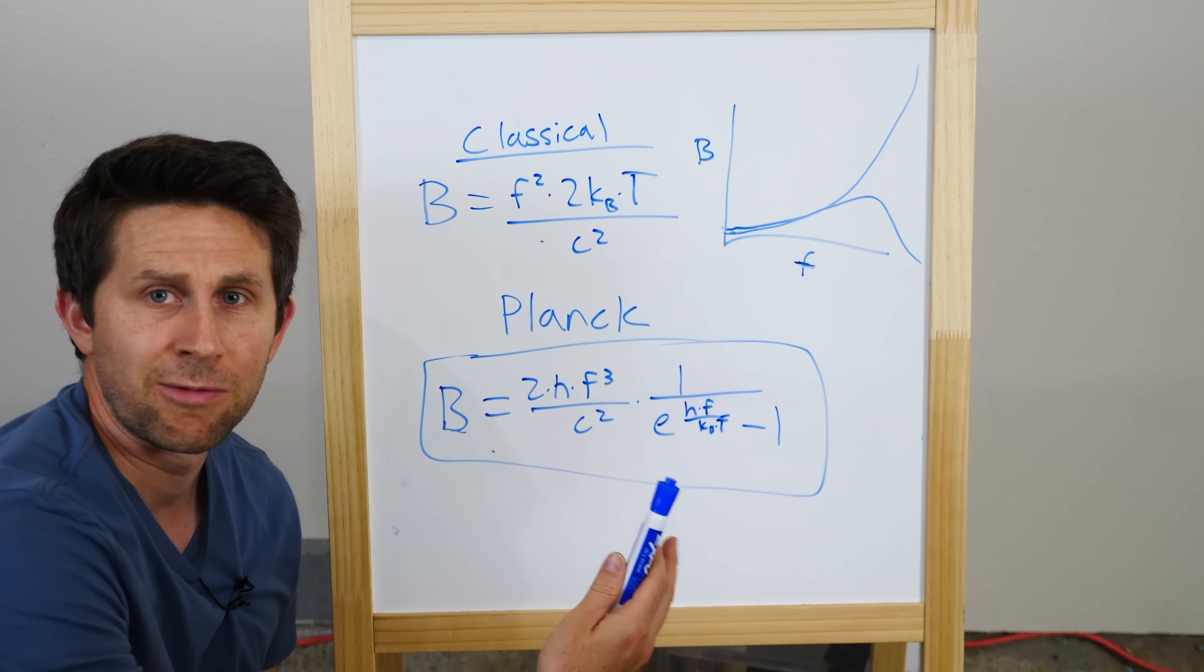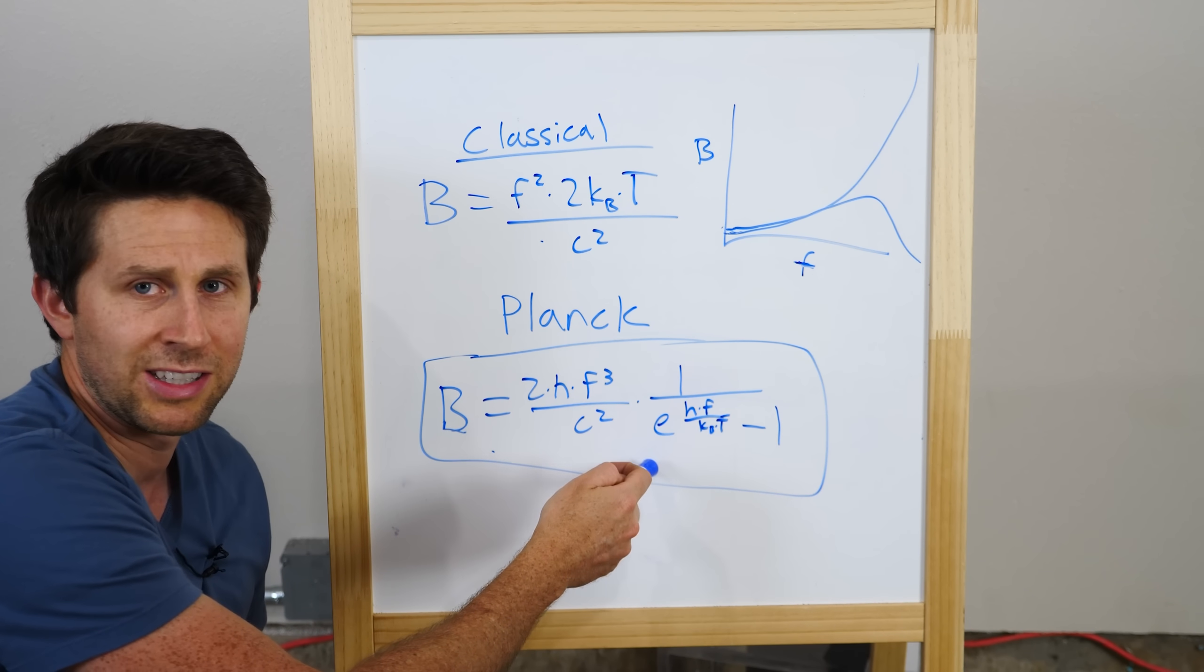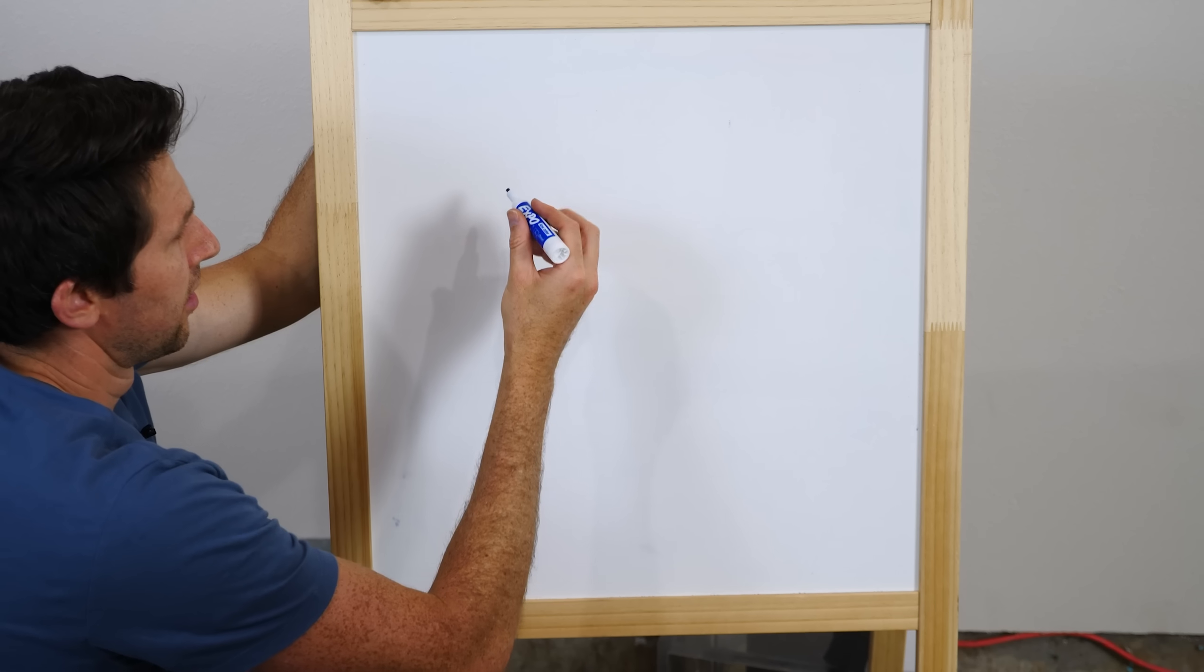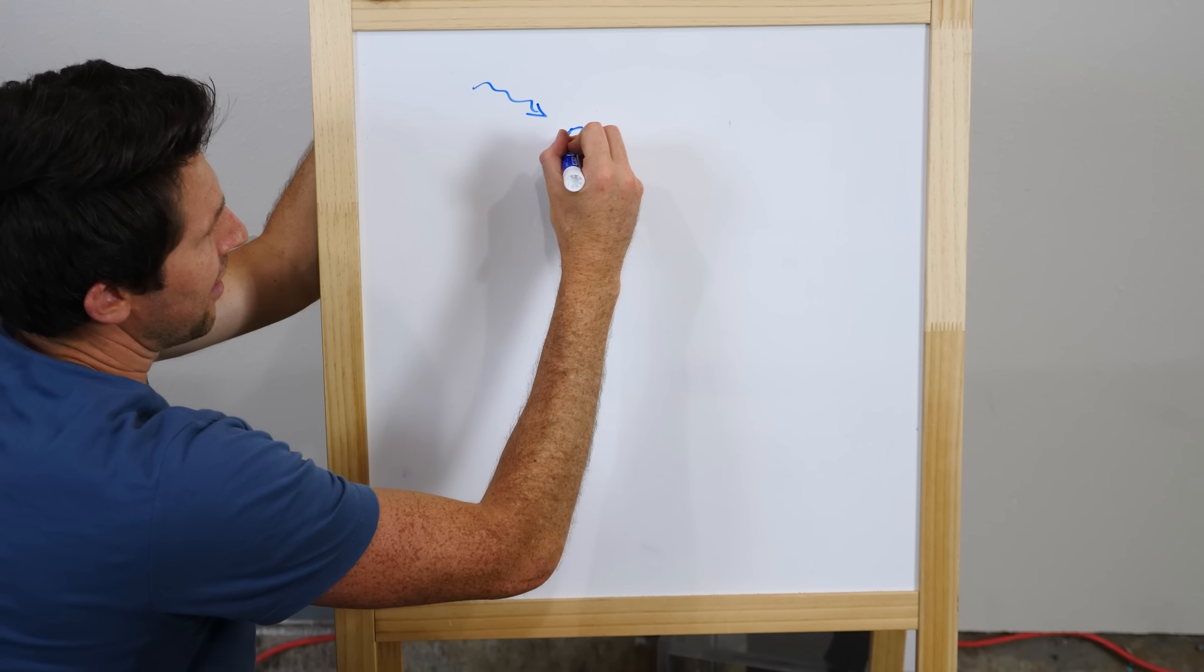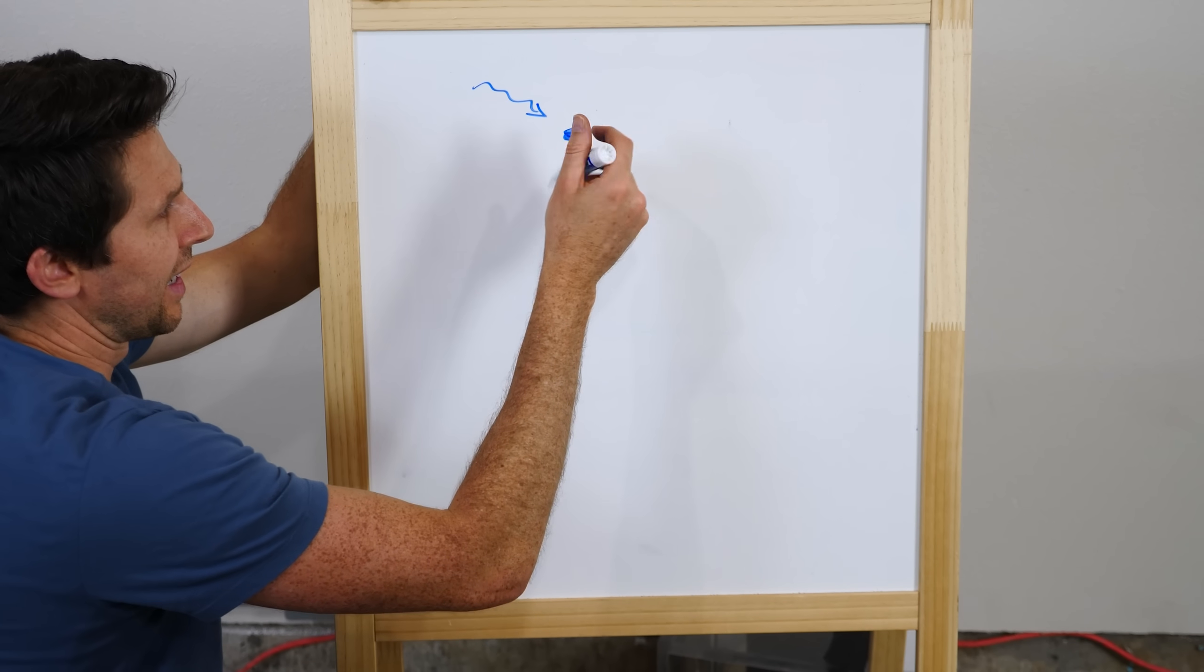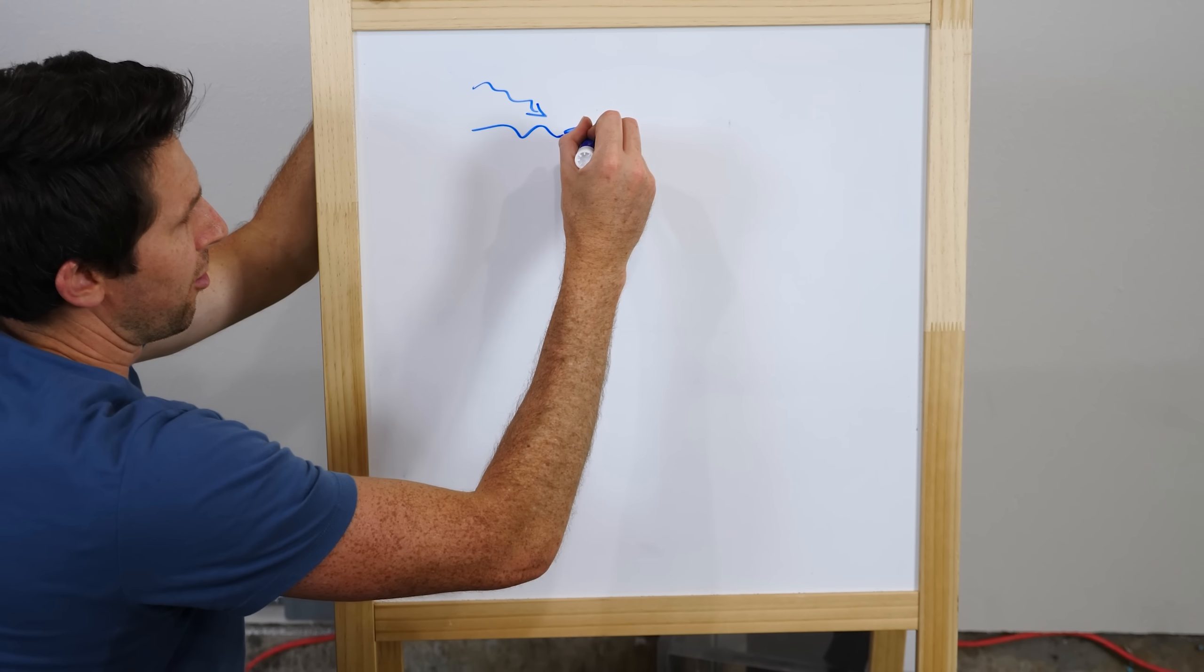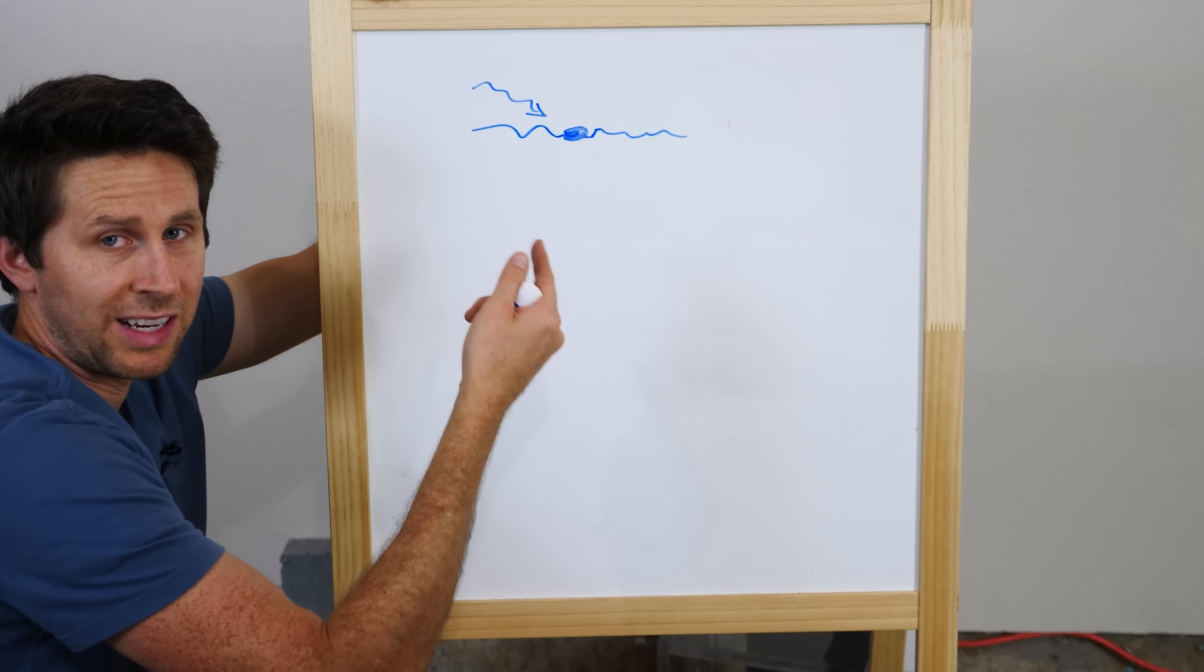And it turns out he didn't have any real physical reason for doing this. He was just trying to get his equation to match what we see in real life. So before, they used to think that when a photon hit an atom, it caused the atom to vibrate kind of like a ball on a spring. It would just vibrate back and forth at any frequency. So they said that that ball could have any frequency.